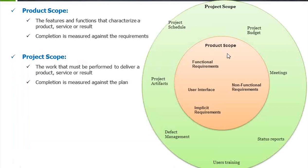Here, there is a project scope and a product scope which need to be addressed by a project manager. The product scope covers the features or functionality that characterize the product, service, or result — completion is measured against the requirements. On the product scope side, we have functional requirements, non-functional requirements like speed and ease of use, user interface, and implicit requirements.